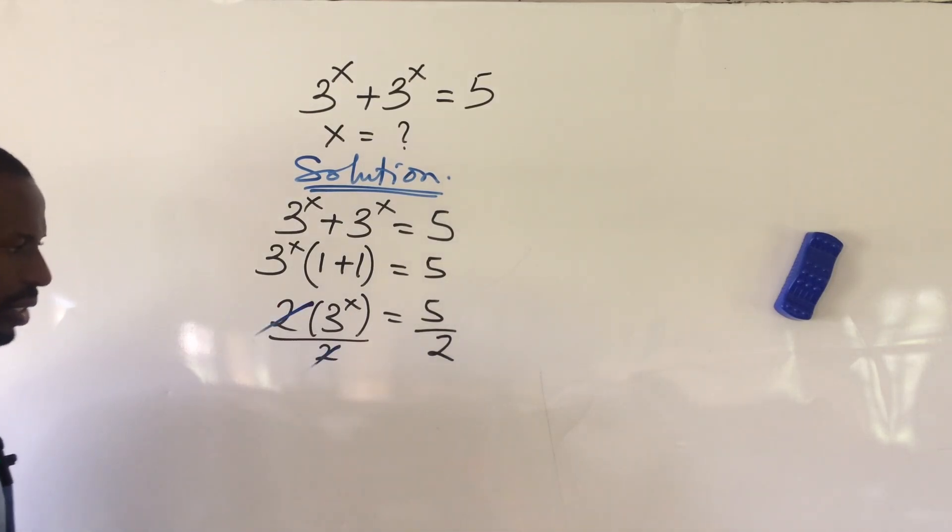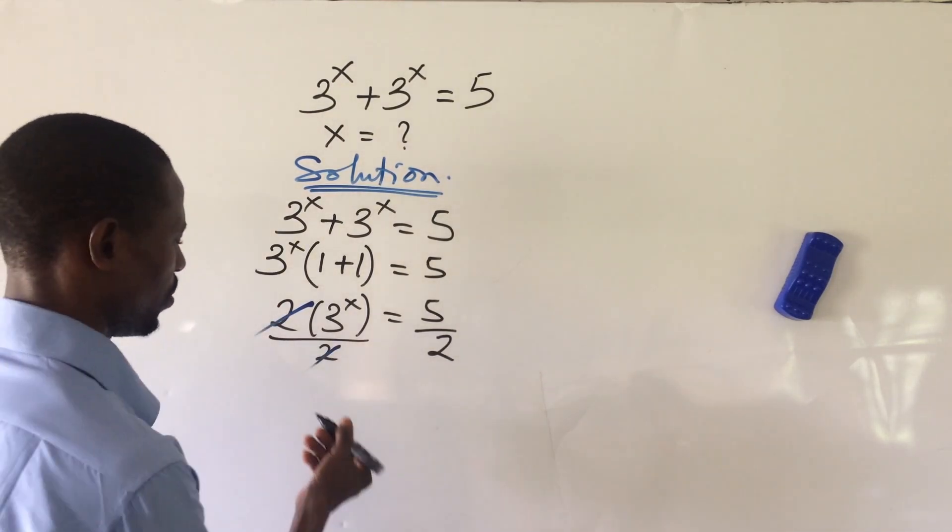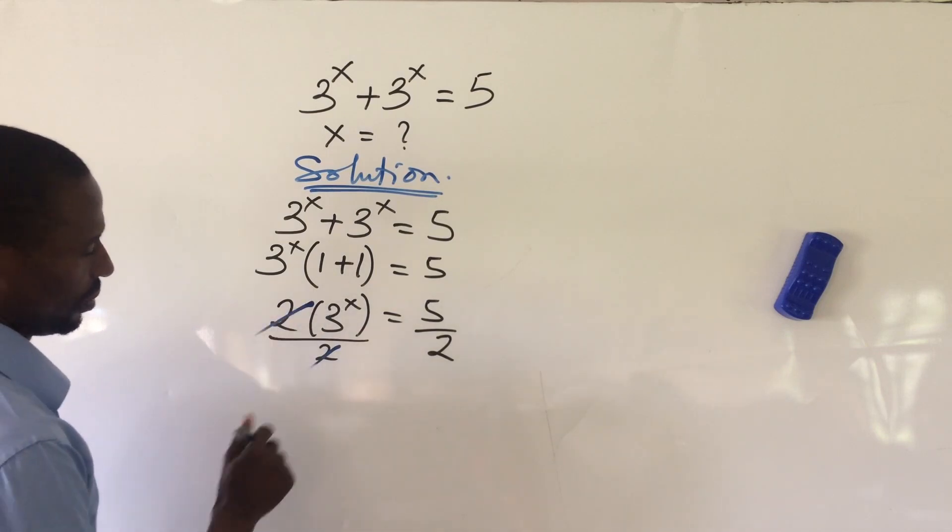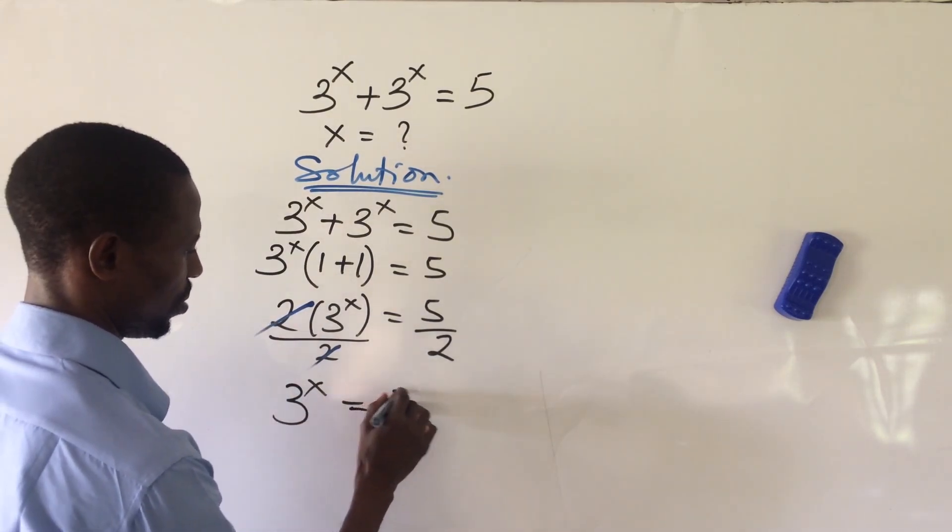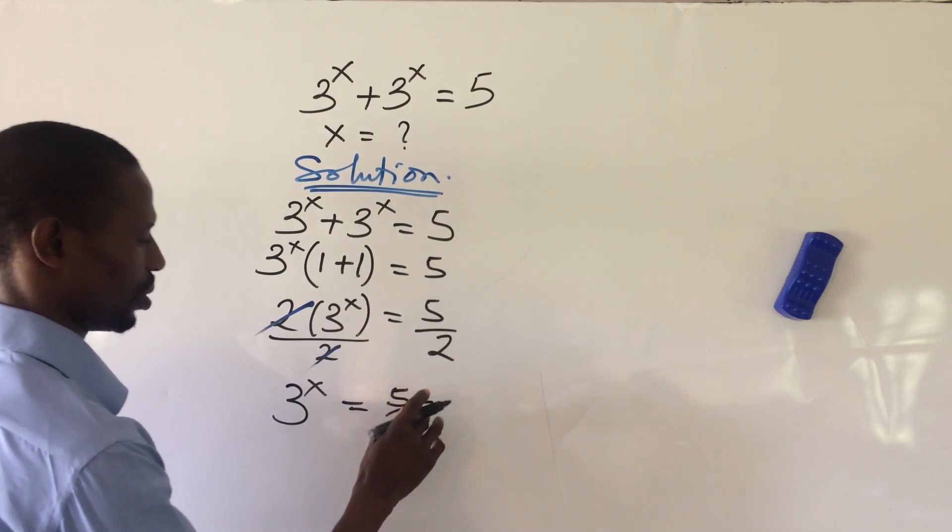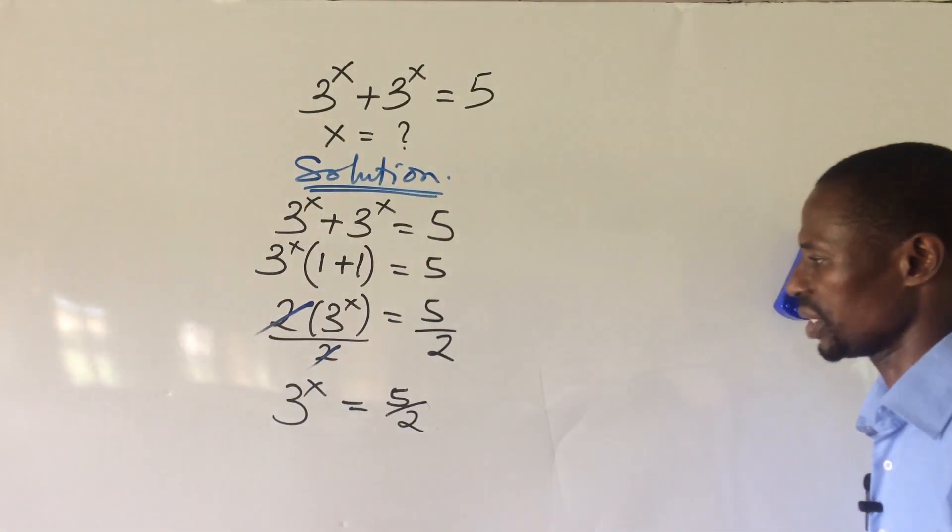This will go with x, so here we're going to have left with 3 to the power of x equal to 5 all over 2 on the left-hand side of the equation.